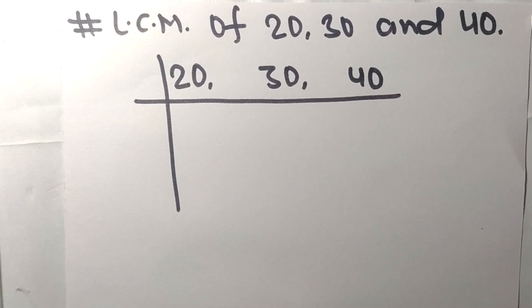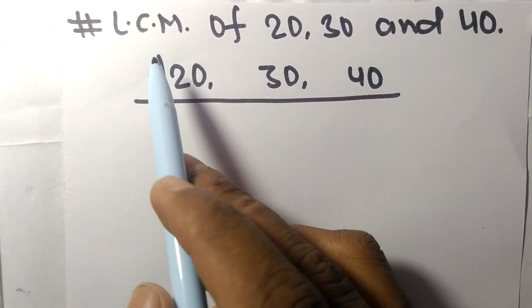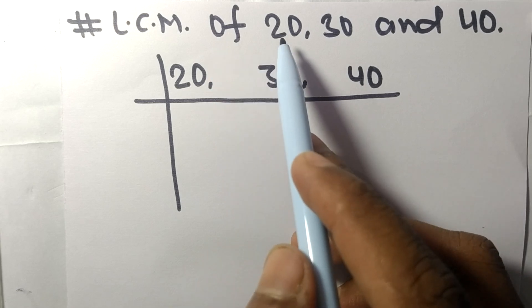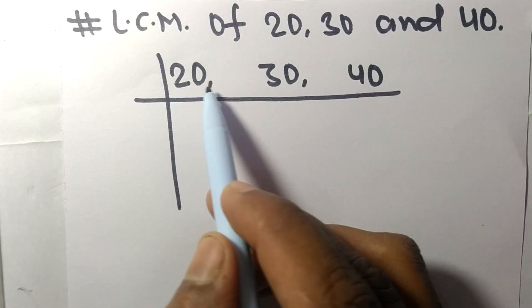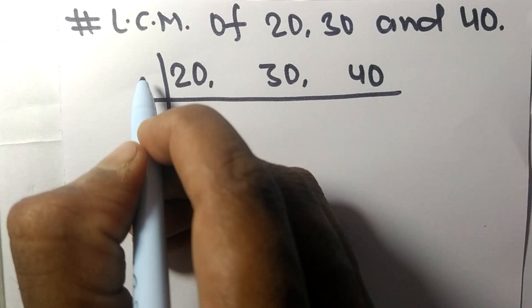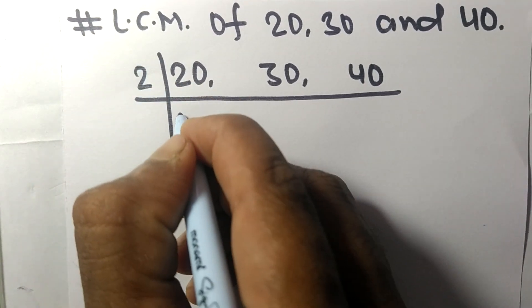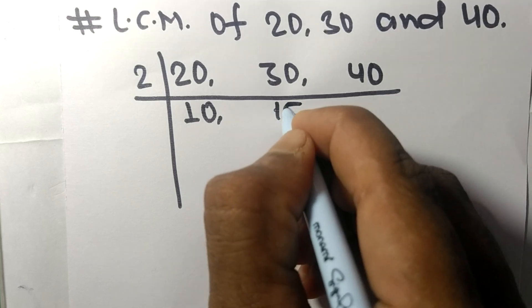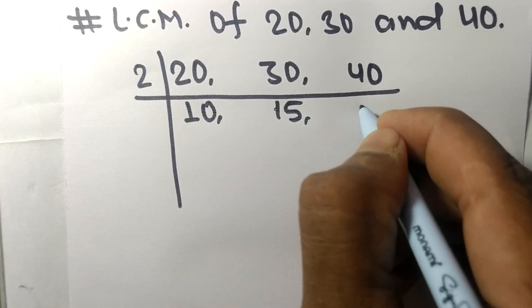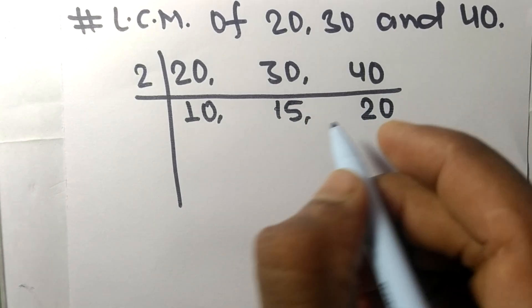Today in this video we shall learn to find the LCM of 20, 30, and 40. These all numbers are divisible by 2. 2 times 10 means 20, 2 times 15 means 30, 2 times 20 means 40.